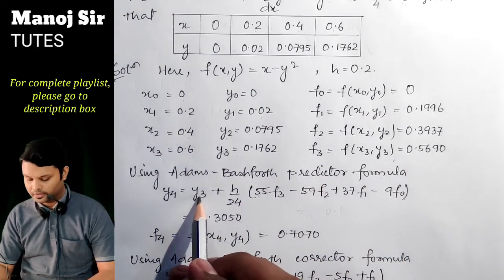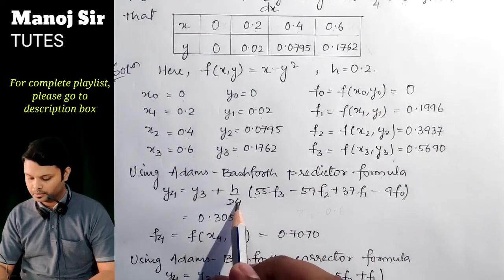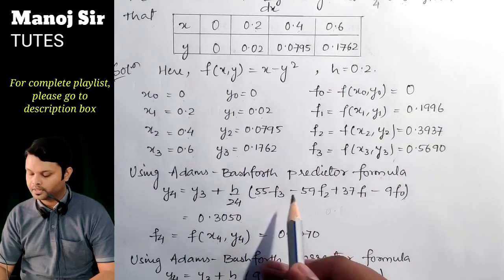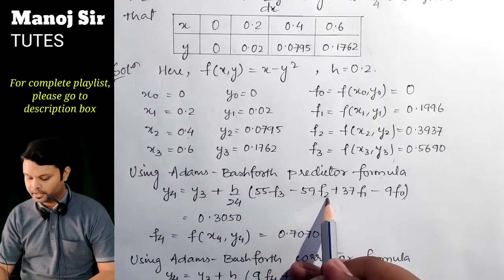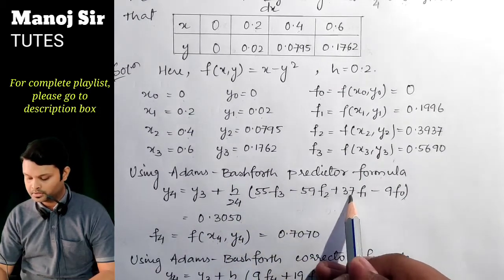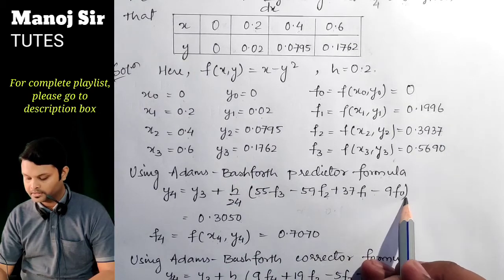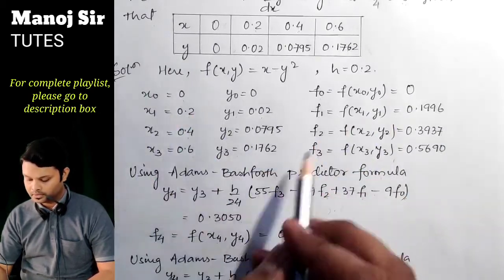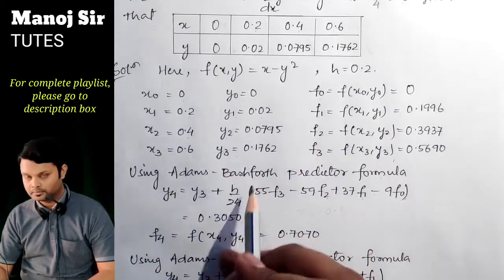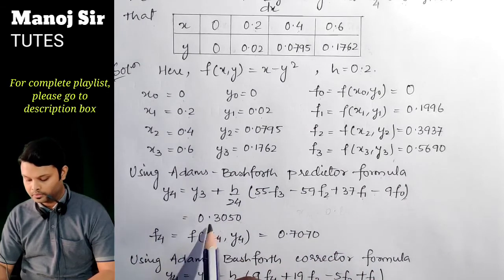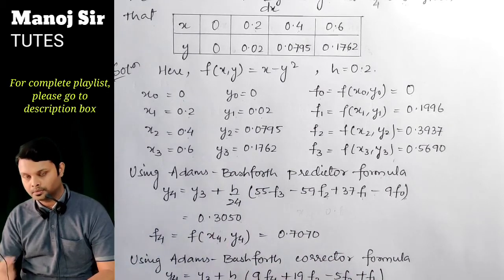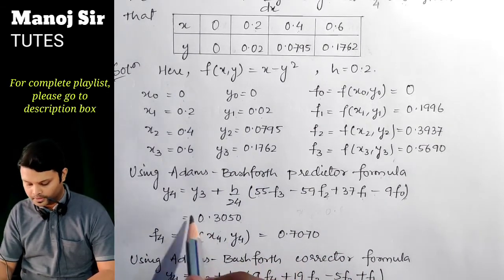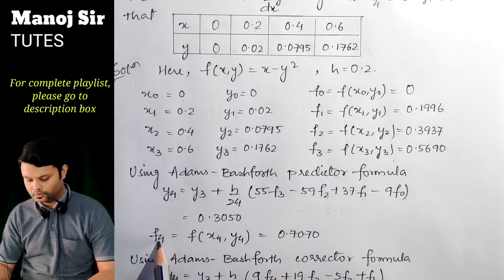Applying the Adams-Bashforth predictor formula: y₄ = y₃ + (h/24)(55f₃ − 59f₂ + 37f₁ − 9f₀). Substituting all the values, we get y₄ = 0.3050 to four decimal places.